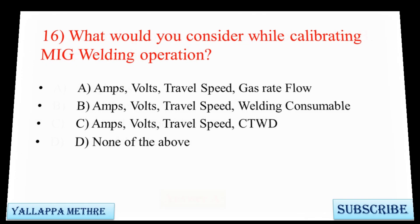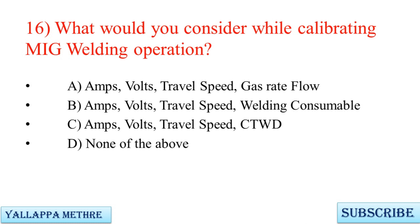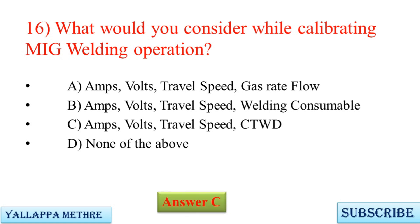Question 16: What would you consider while calibrating a MIG welding operation? A. Amps, volts, travel speed, gas flow rate. B. Amps, volts, travel speed, welding consumable. C. Amps, volts, travel speed, CTWD. D. None of the above.